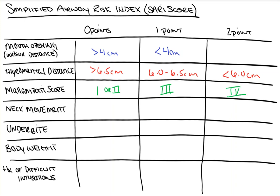Fourth on our list is neck movement — specifically neck extension, or the patient's ability to tilt their chin to the sky. Movement of greater than 90 degrees is worth 0 points, 80 to 90 degrees is worth 1 point, and less than 80 degrees is worth 2 points. Just like the thyromental distance, most people aren't going to use a caliper, so we eyeball this.